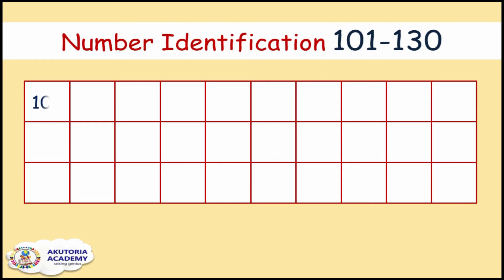One zero one — one hundred and one. One zero two — one hundred and two. One zero three — one hundred and three. One zero four — one hundred and four. One zero five — one hundred and five.